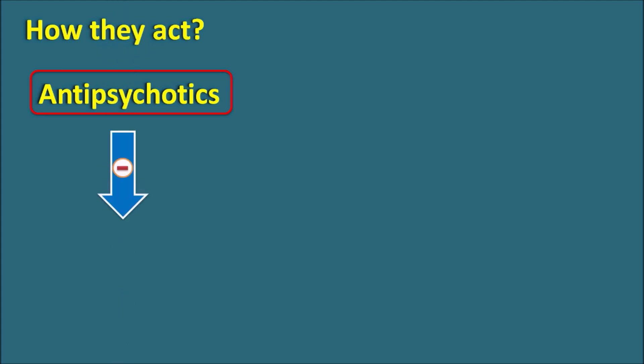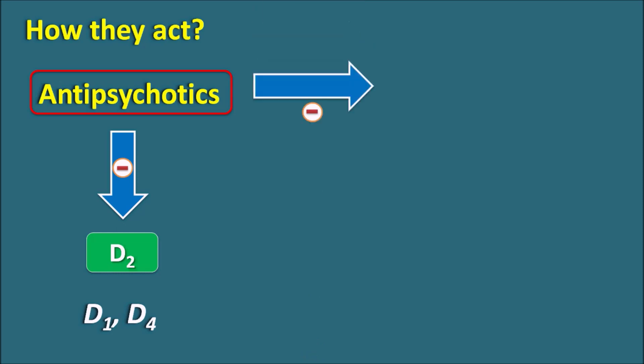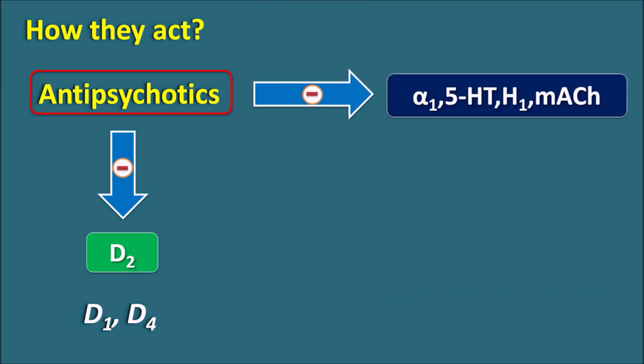Antipsychotics are mainly acting as dopamine antagonists, particularly blocking D2 receptors. Few antipsychotics like clozapine and olanzapine can block D1 and D4 receptors, which is why they are atypical. Apart from dopamine receptors, antipsychotics can also block alpha-1 receptors, 5-HT receptors, H1 receptors, and muscarinic acetylcholine receptors. The side effects of antipsychotics may be related to the blockade of all these receptor types.